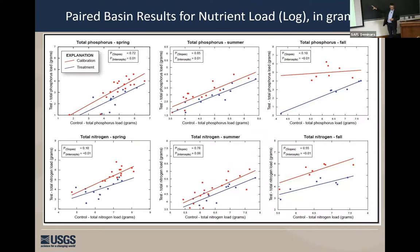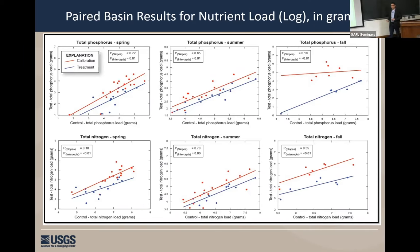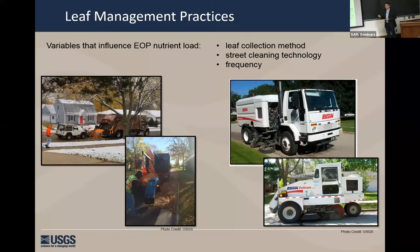This was the take-home message from that initial effort. We're comparing the do-nothing scenario — represented by the red line — to the do-everything scenario represented by the blue line. Looking at total phosphorus loads in spring, summer, and fall on the top row, and total nitrogen loads on the bottom row. The blue line has clearly shifted away from the red line, and we can quantify this. This was proof that leaf collection has a major influence, and now we can start stepping back and evaluating actual municipal practices.